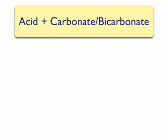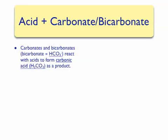The second type of gas evolution reaction is when an acid is reacted with either a carbonate or bicarbonate compound. The bicarbonate ion is HCO₃⁻. When these and carbonates are reacted with acids, it results in the formation of carbonic acid, or H₂CO₃.